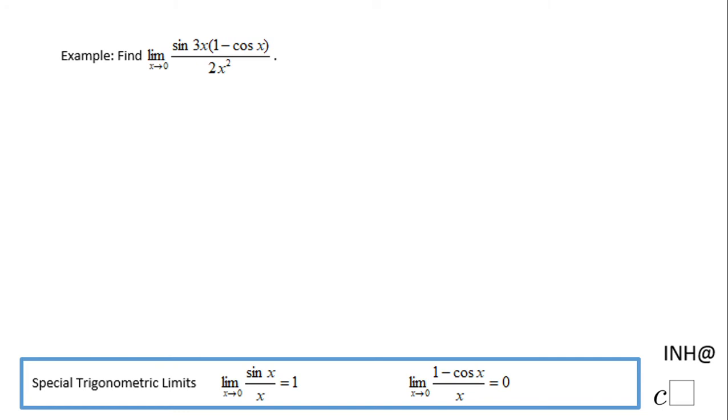Welcome or welcome back to I Need Help at C Squared. In this problem, we need to find this limit: the limit as x approaches 0 of sine of 3x times the quantity 1 minus cosine x over 2x squared.